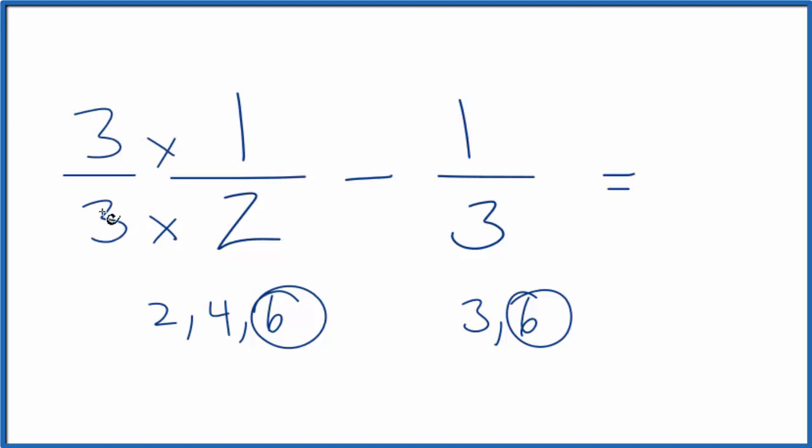That way, three divided by three is just multiplying by one. I don't change the value. Over here, three times two gives me six. But again, I have to multiply the top by two as well. So I'm just multiplying by one.